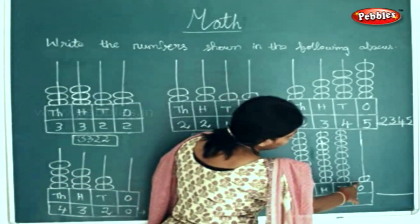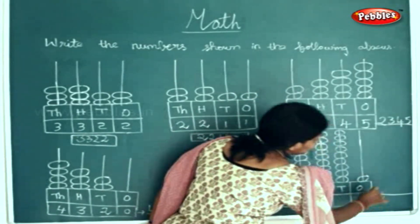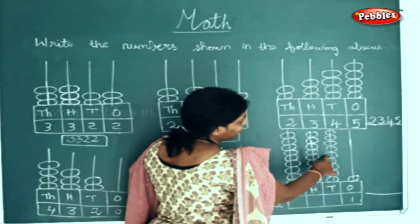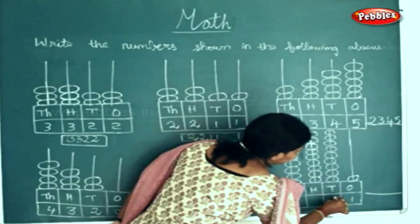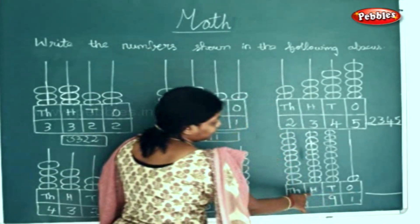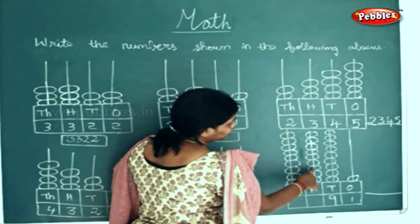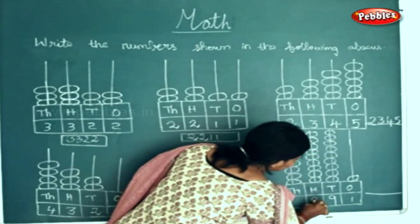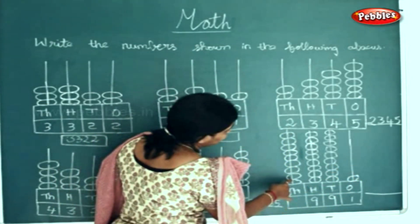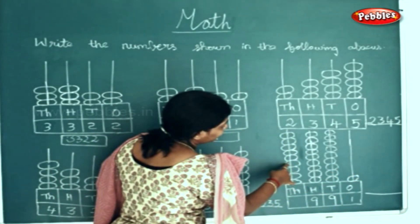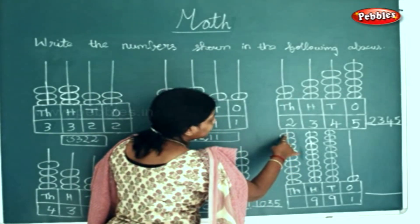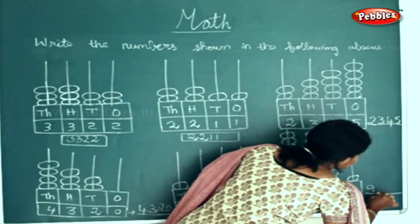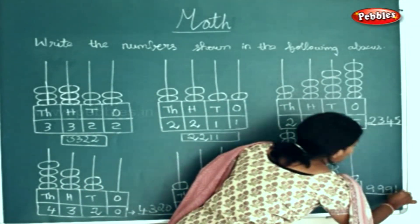Next sum. How many beads in the ones place? One bead. How many beads in the tens place? One, two, three, four, five, six, seven, eight, and nine. How many beads in the hundreds place? One, two, three, four, five, six, seven, eight, and nine again. Now we'll count the thousands place: one, two, three, four, five, six, seven, eight, and nine again. So this will be written as nine thousand nine hundred and ninety one.